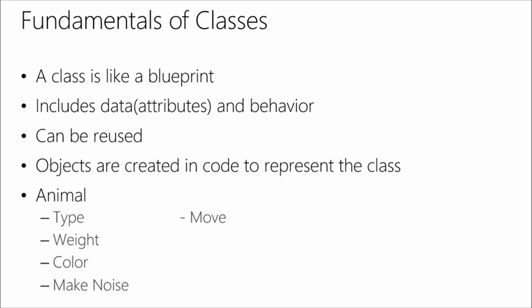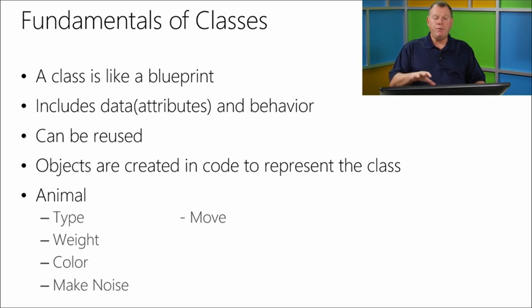When we create a class file, it includes all of the data — what we refer to as the attributes — and all of the behaviors of that specific class. The data becomes the defining characteristics: the color of the car, how many doors it has, how many windows. Those are data or attributes of the class. Looking at an example of a class called Animal, the attributes are the type, the weight, and the color. That is considered the data or attribute of that particular animal class.